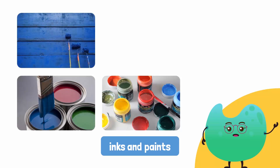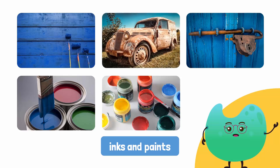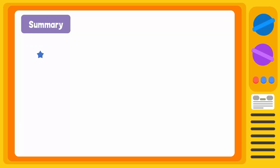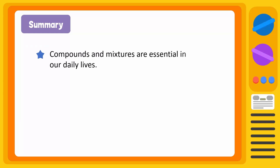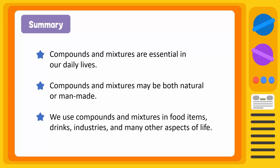Paints are used to coat and decorate our walls. They are also used for covering gates, doors, and locks in order to prevent rusting. To summarize, compounds and mixtures are essential in our daily lives. They may be both natural or man-made. We use compounds and mixtures in food items, drinks, products, and many other aspects of life.